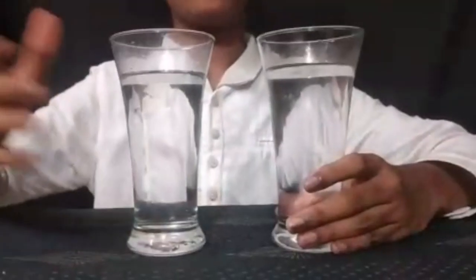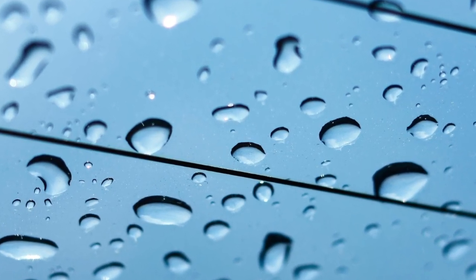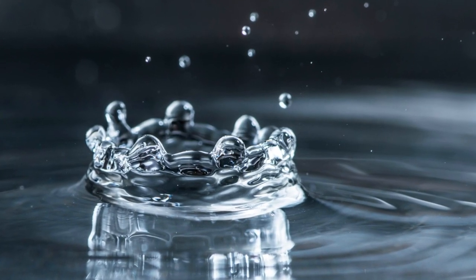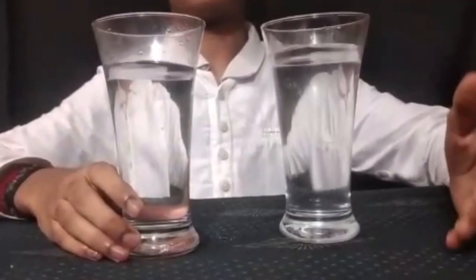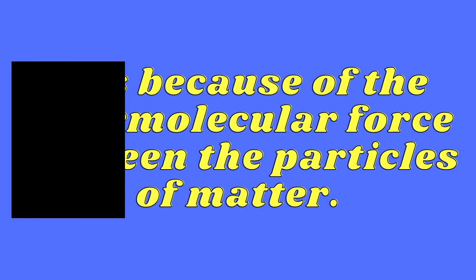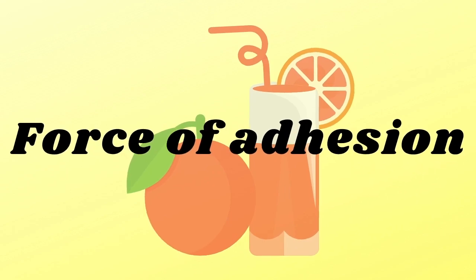Have you ever wondered why a small drop of water, when dropped, always forms a sphere? Let me drop some water at different heights and show you. Whether dropped upwards or downwards, it always forms a sphere. This is because of the intermolecular force between the particles of matter. There are two common intermolecular forces. The first is the cohesive force, which attracts the particles of water together — this is why a liquid drop always forms a sphere. The second is the adhesive force, which acts between the particles of water and the particles of glass, causing water to stick to the glass.